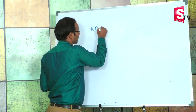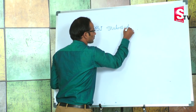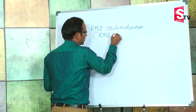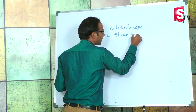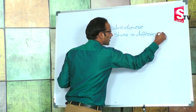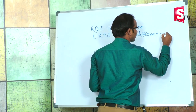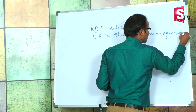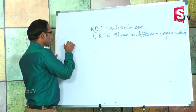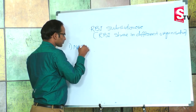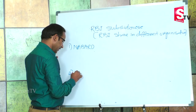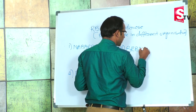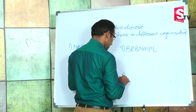What are the RBA subsidiaries? RBA subsidiaries is nothing but RBA's share in different organizations. The RBA subsidiaries are: first is NABARD, second is DICGC, third is BRPNMPL, and fourth is NHB — National Housing Bank.